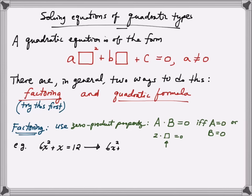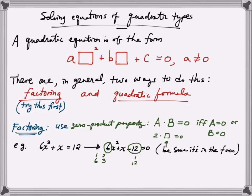To factor 6x² + x - 12 = 0, I'm going to look for factors of 6 and factors of negative 12, listing them below. Factors of 6 could be 2 and 3, or 1 and 6. Factors of negative 12 could be 1 and 12, 2 and 6, or 3 and 4. Then look for combinations that give a sum of 1 in the middle term.